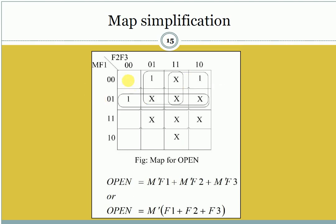We know that this square represents 0. The cells are numbered: 0, 1, 2, 3, 4, 5, 6, 7, 8, 9, 10, 11, 12, 13, 14, and 15. So we put 1 into positions 1, 2, and 4 from the truth table, and we put don't care at positions 3, 5, 6, 7, 11, 13, 14, and 15.